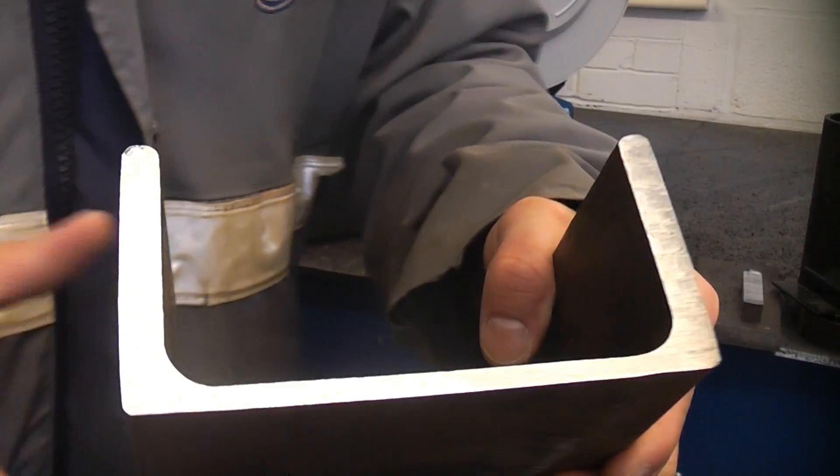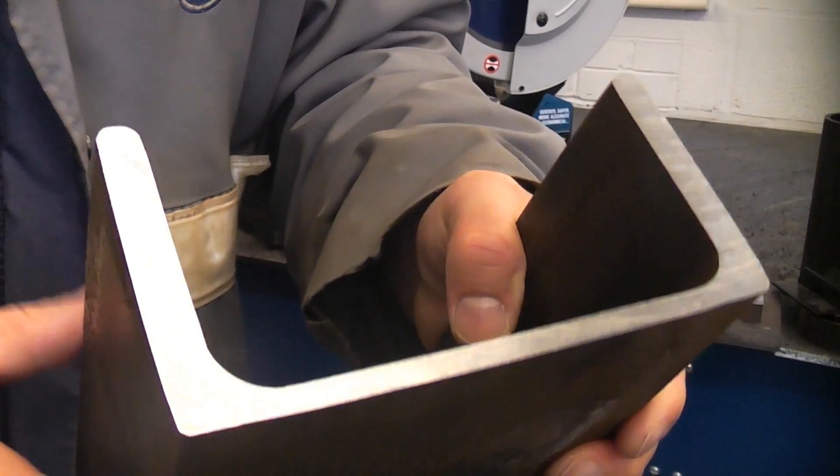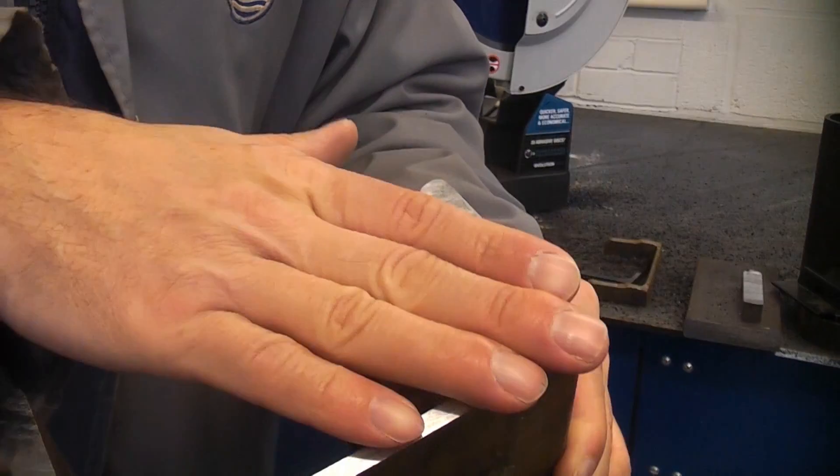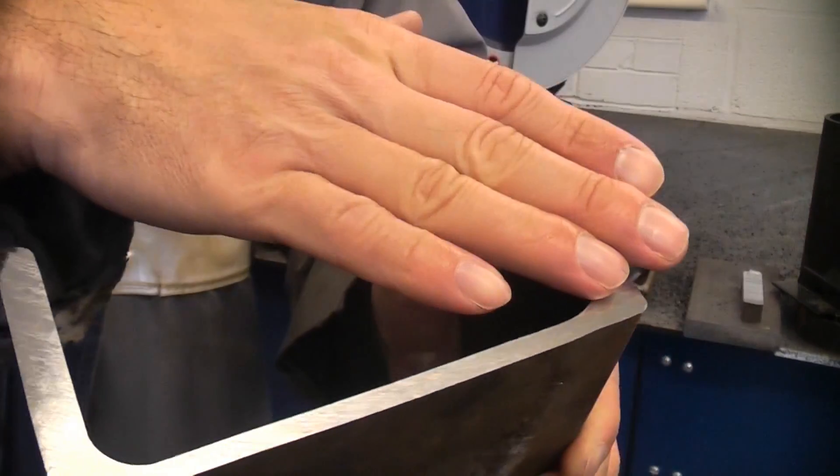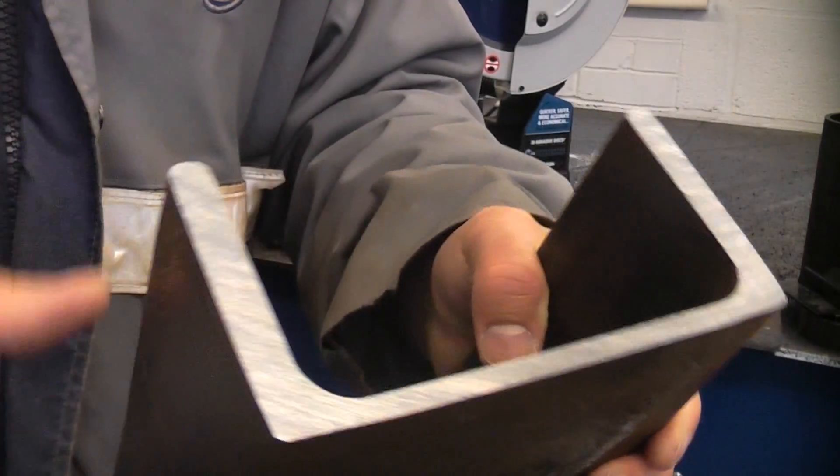If you look at the quality of the cut on there you can see that we have got an extremely clean cut and of course with all Evolution saws once you've cut through the material it is absolutely cold to the touch.